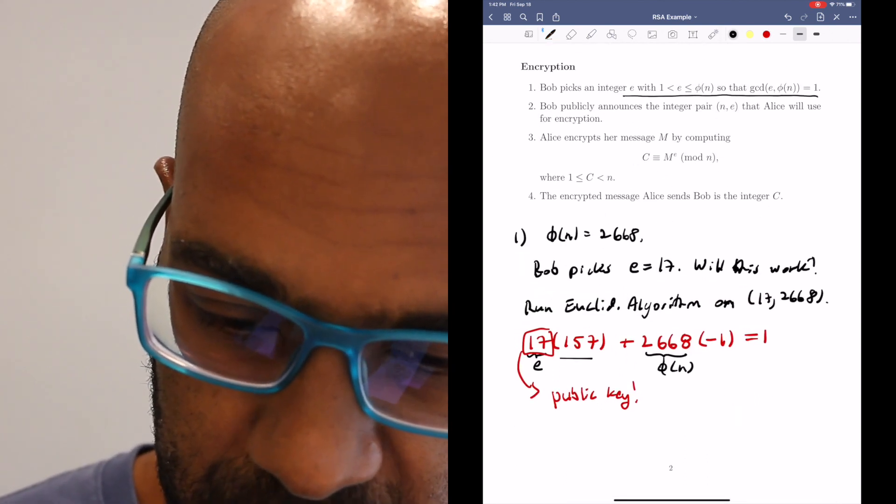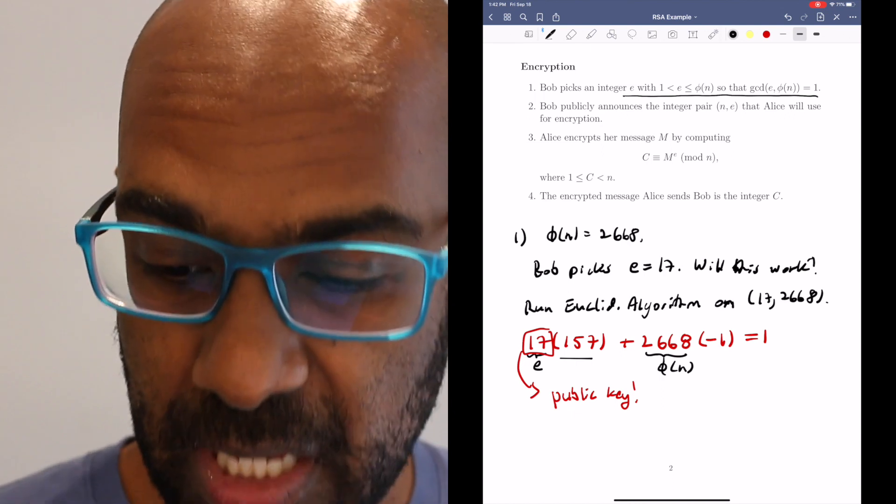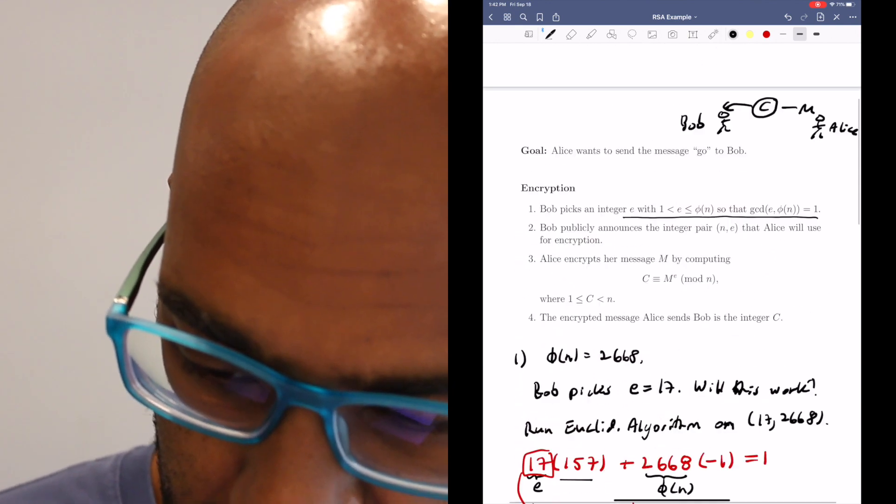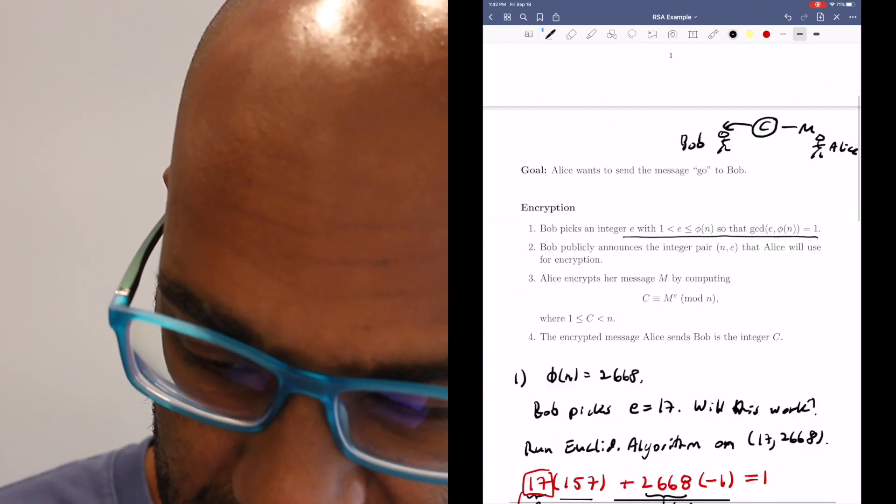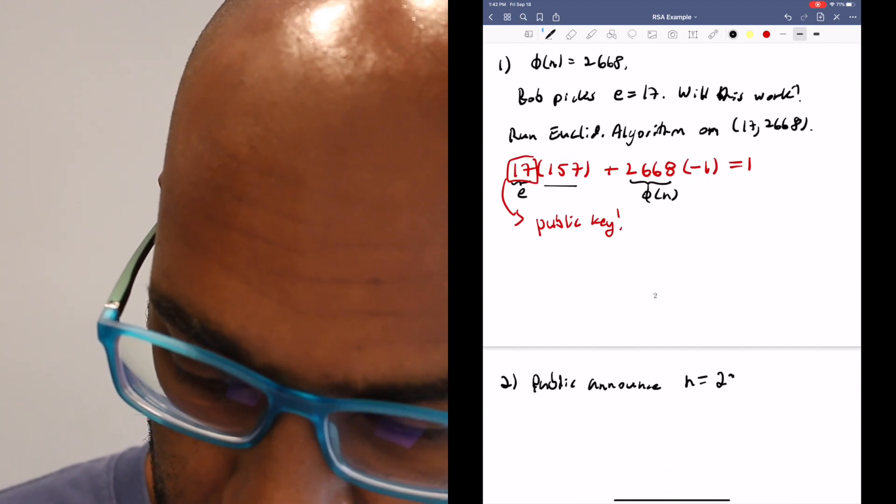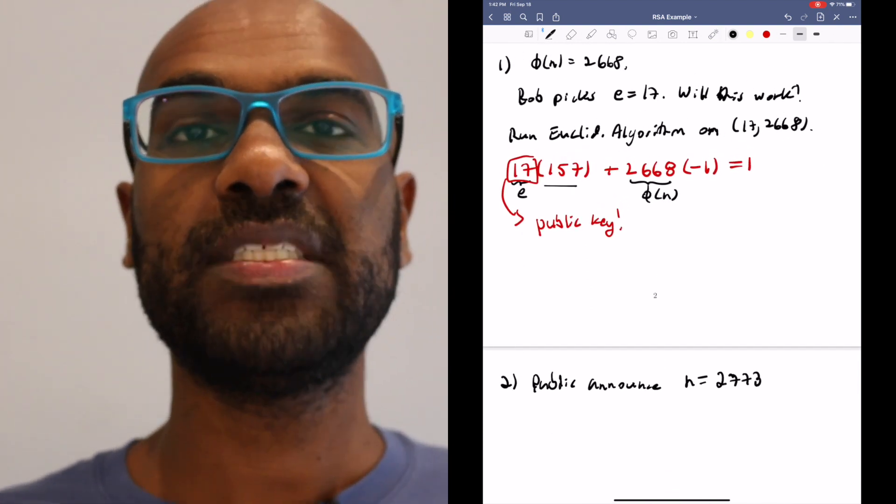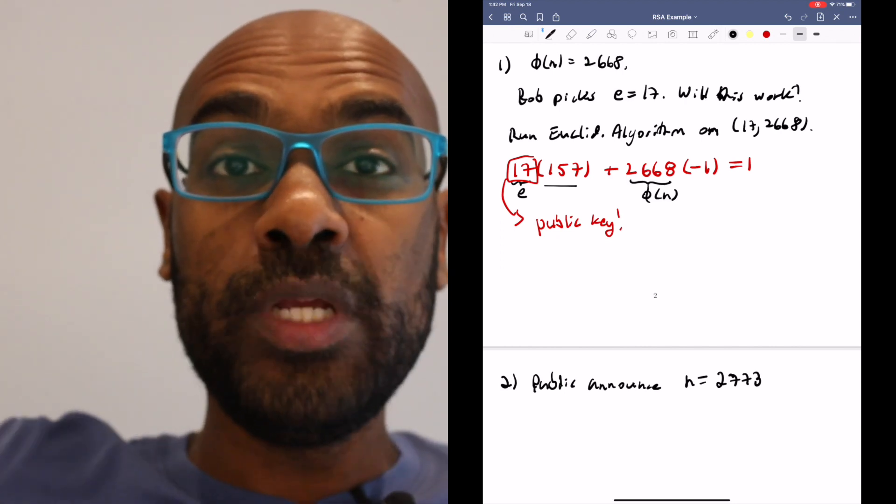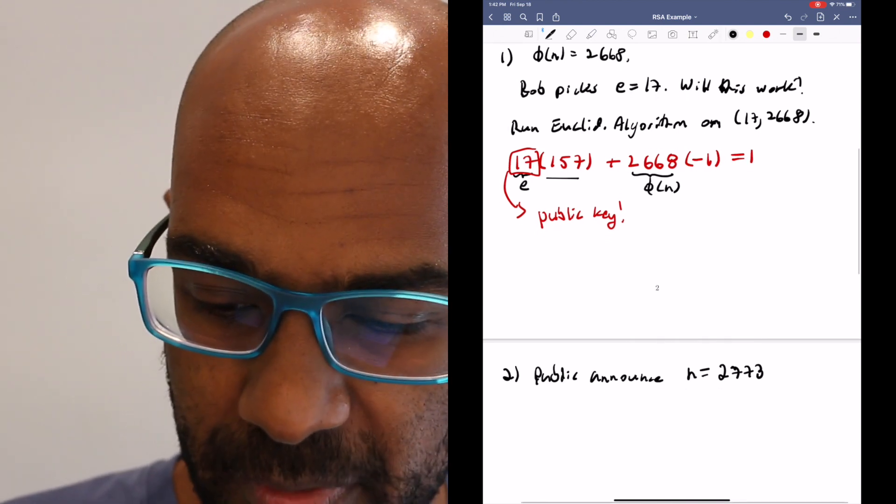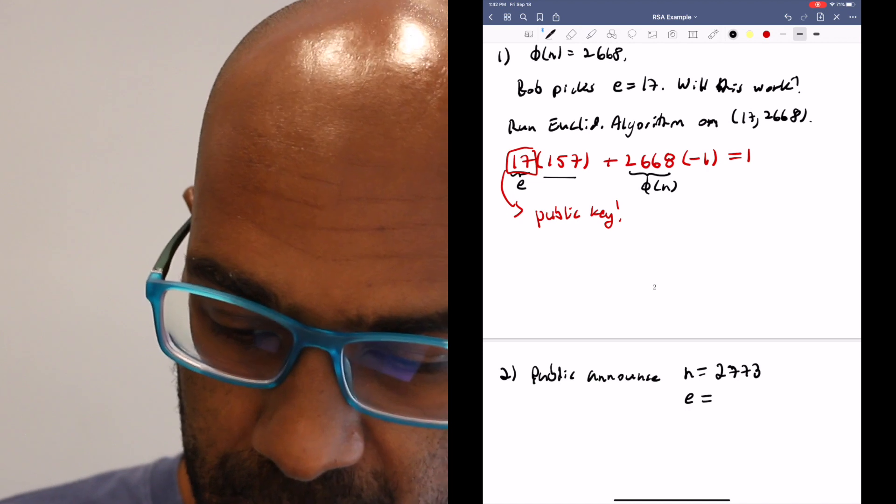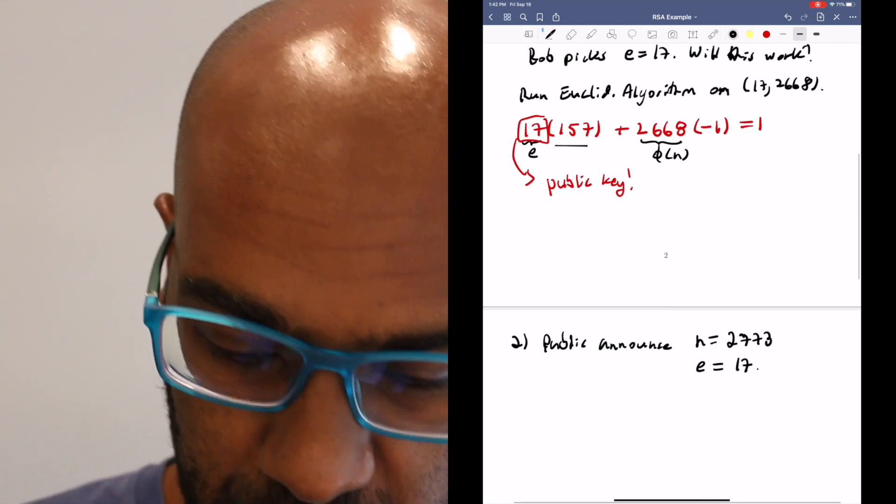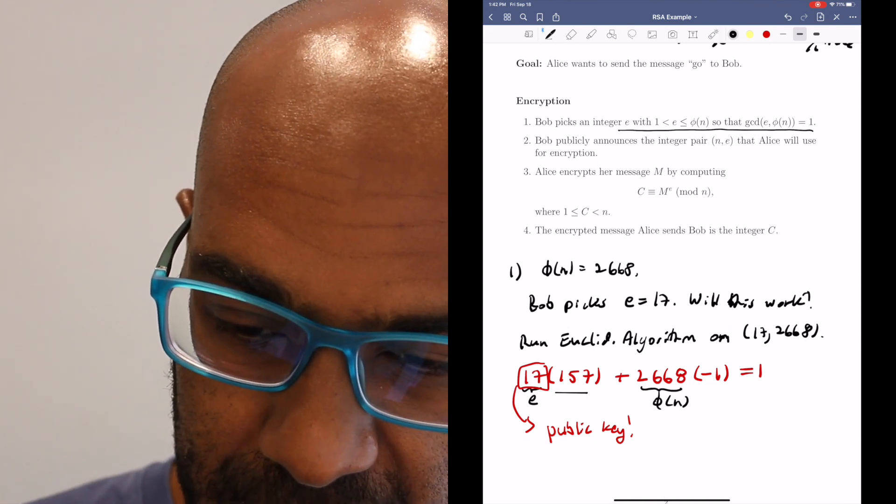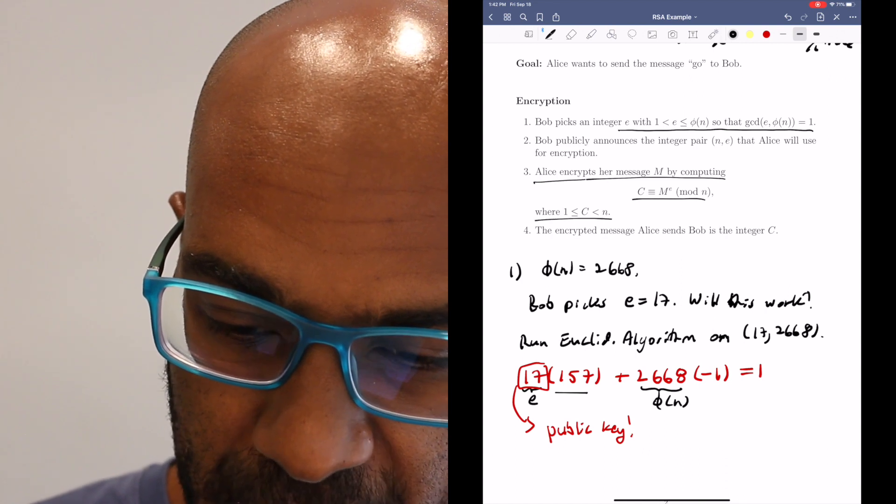Now what we need to do is publicly announce this. Alice has this pair publicly announced: n is the number that it is, which is 2773. You can imagine if you didn't have a calculator, 2773 is a hard number to know the prime factors of. In general, if this number was really massive, computers can't even do a good job of figuring that out. And then E is 17 is going to be publicly announced as well. This is the stuff people need to do work. So now Alice is going to do some work. She's going to take her message and encrypt it.